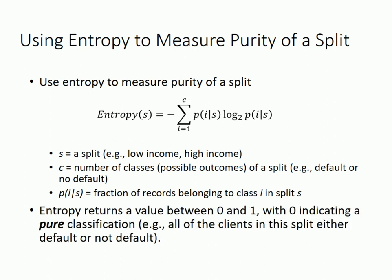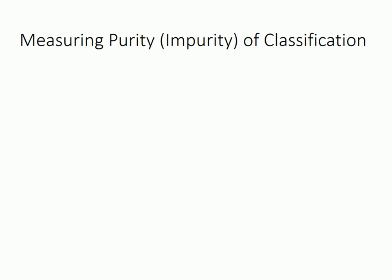Entropy gives you a number between 0 and 1. Zero means that the data is pure — in other words, all of the records in this split have the same outcome, either all default or all do not default. Entropy of 1 means that the records in this split are extremely impure. Each classification has multiple splits — for example, classifying by income has two splits: low-income and high-income.